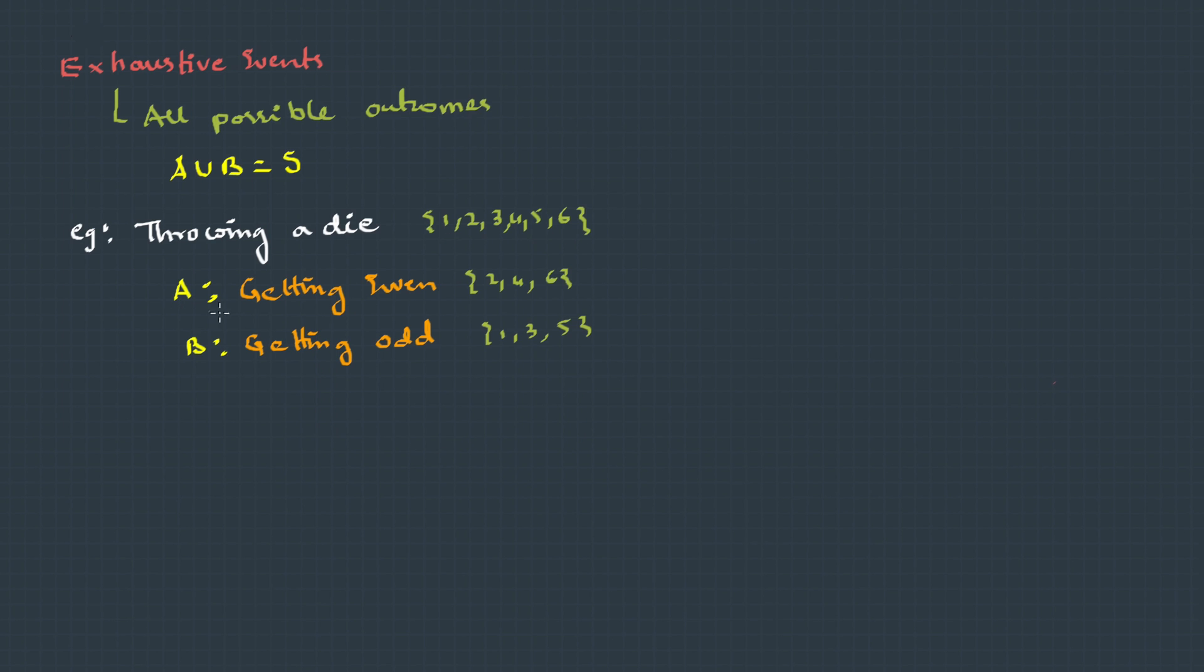And let's say there's an event A, which is getting an even number, which is either 2 or 4 or 6. And event B is getting an odd number, which includes 1, 3 and 5. And by looking at the combination, we can say these two together will become exhaustive events. Because the union of these two events results in the sample space.